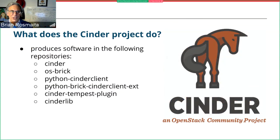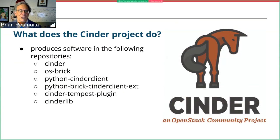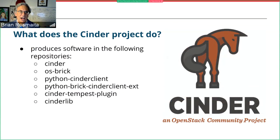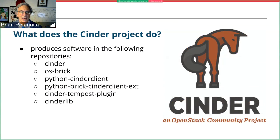What does the Cinder project do? We produce software in a whole lot of repositories. The Cinder repository is where the main Cinder code is stored — it provides the REST API and all the services that make the block storage service work. We also have a library called OSBrick, which is used to actually attach volumes; Nova uses it to attach volumes to instances. Cinder itself also uses brick when it needs to attach a volume to perform some type of service. We provide the Python Cinder client, which provides Python bindings to the REST API, and the Python Brick Cinder client extension, which allows you to use OSBrick for attachments via the command line. We also provide the Cinder Tempest plugin and CinderLib.